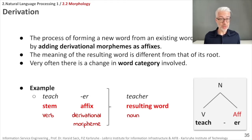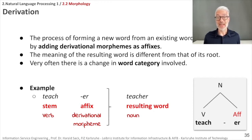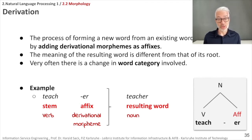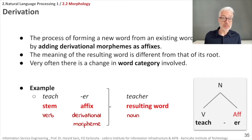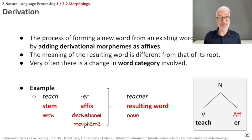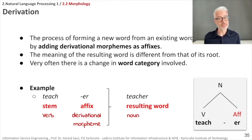Derivation is the process of forming new words out of existing words by adding derivational morphemes as affixes. As a result, the meaning of the resulting word differs from its root, and often the word category changes too. For example, the verb stem 'teach' plus the affix 'er' becomes 'teacher' — a noun. The word changes its category from verb to noun, and the meaning shifts from the act of teaching to the person who teaches.